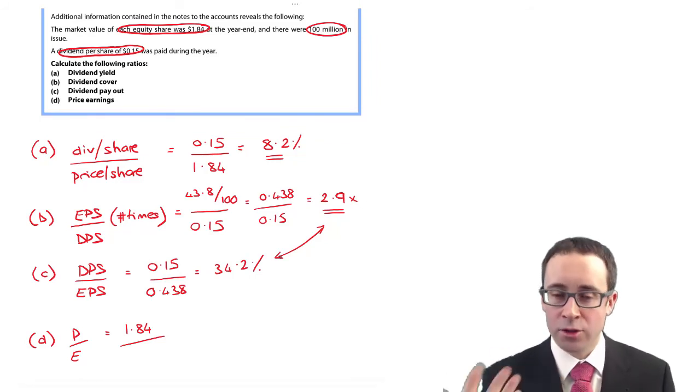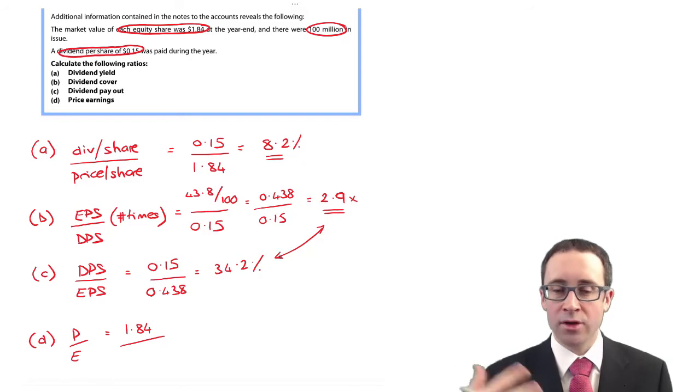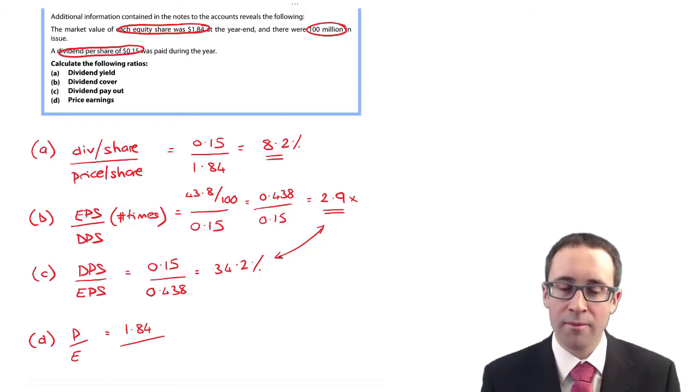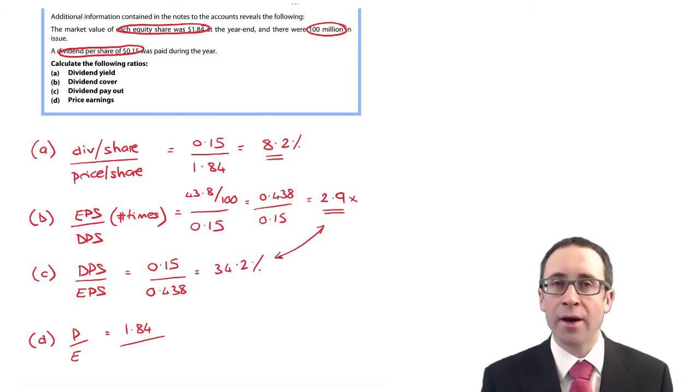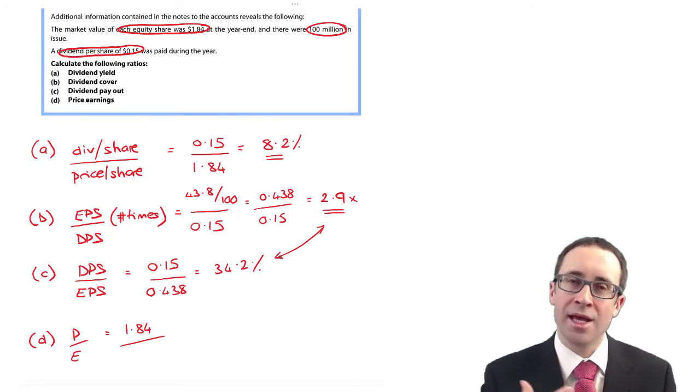If you do 1 divided by 2.9, so 1 divided by a dividend cover, you will get 34.2%. And if you do 1 divided by 34.2%, you will get 2.9. They're telling you the same thing, but in a different fashion.